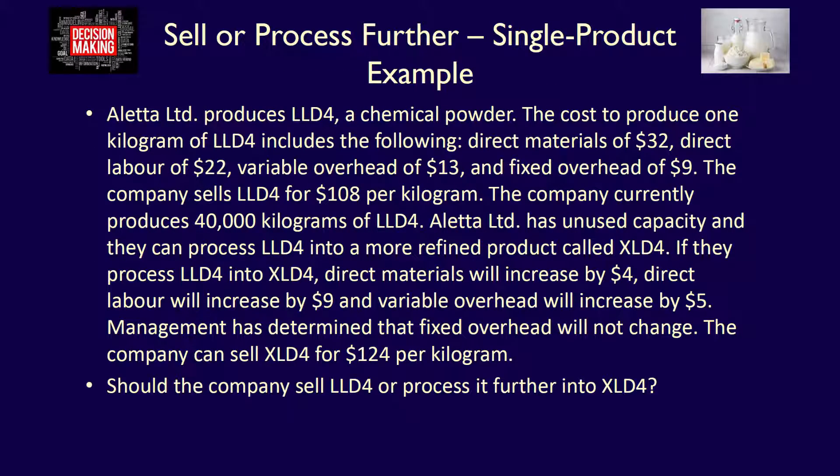Aletta Limited produces LLD4, a chemical powder. The cost to produce one kilogram of LLD4 includes direct materials of $32, direct labor of $22, variable overhead of $13, and fixed overhead of $9. The company sells LLD4 for $108 per kilogram and currently produces 40,000 kilograms of the product.